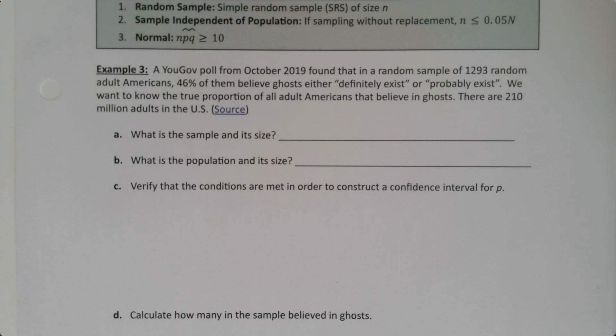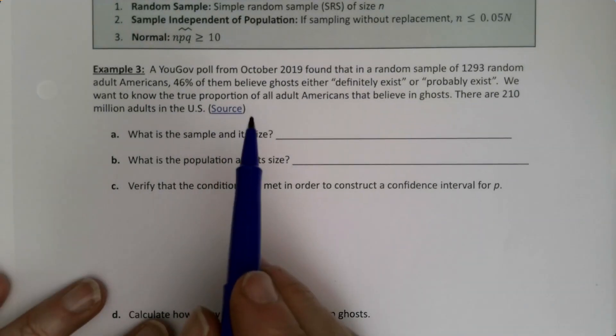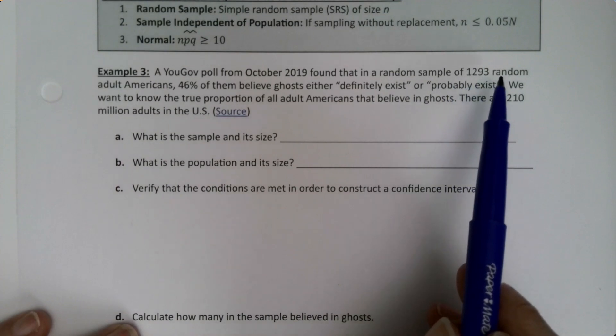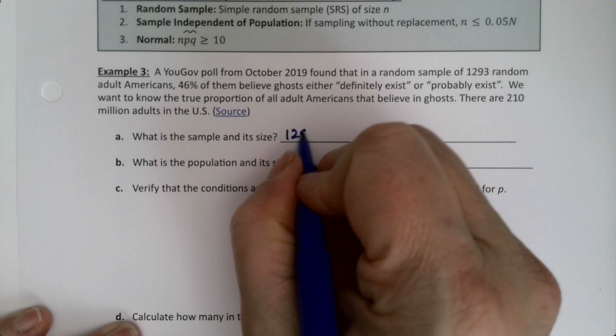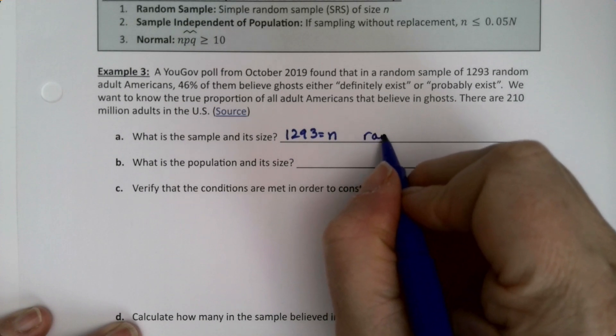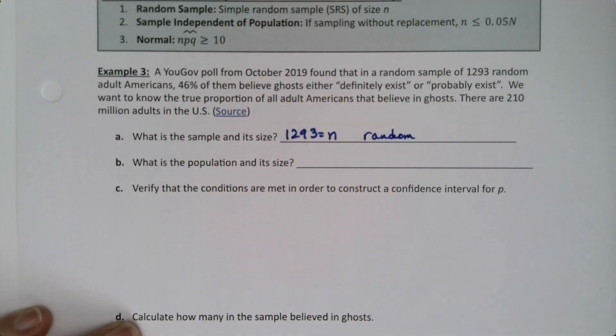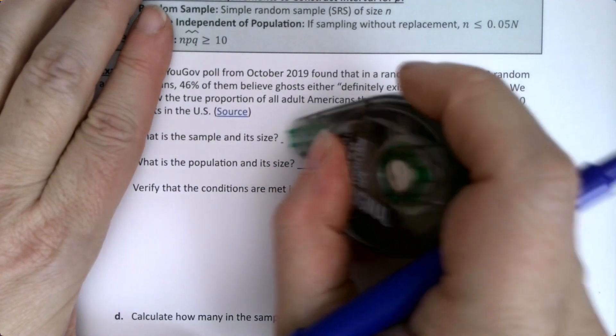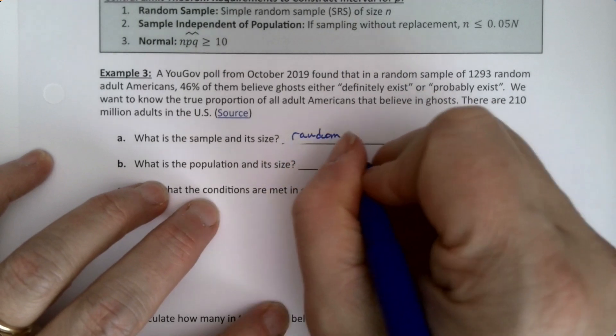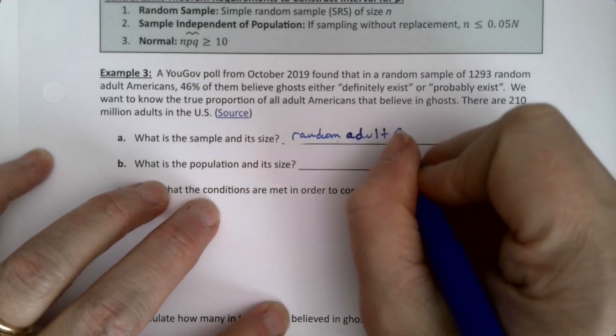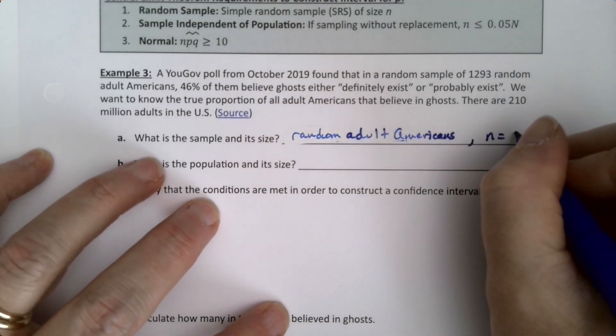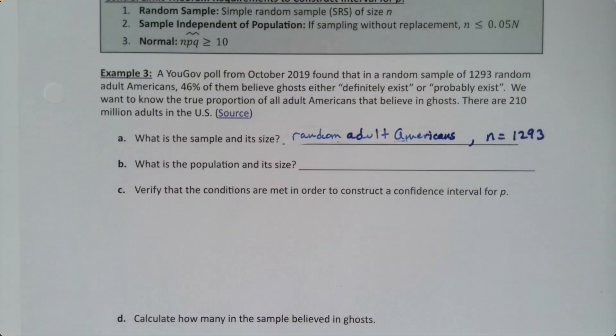What's the sample and its size? That would be the group we talked to—1293 random adult Americans. Actually, I should reverse this if I'm going to go in the order they asked.